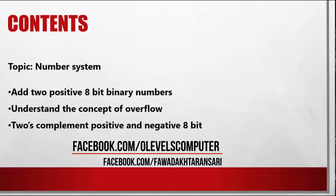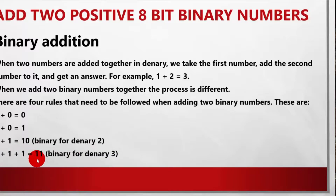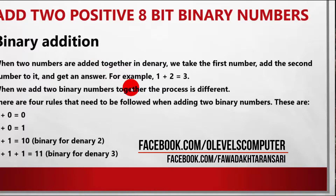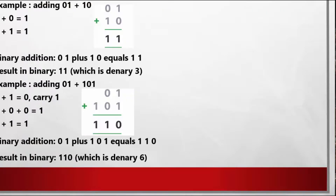We are only studying the new syllabus content: you can add two positive 8-bit binary numbers — binary addition. There is a rule we must understand: 0 plus 0 equals 0; 1 plus 0 equals 1; 1 plus 1 equals 10 in binary (which is 2 in decimal); and 1 plus 1 plus 1 equals 11 in binary (which is 3 in decimal). These are the four fundamental components we must learn to do binary addition.